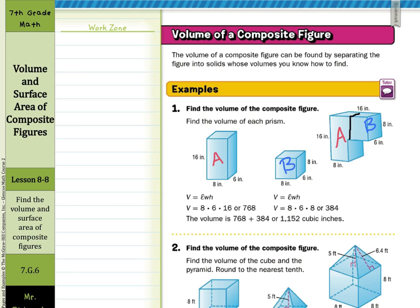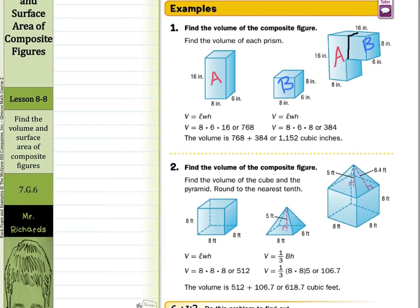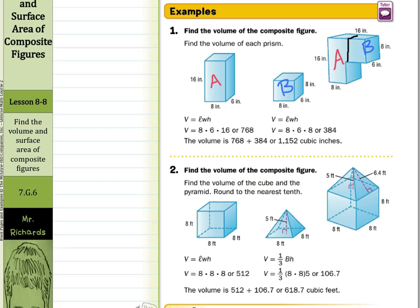For guided example 2, find the volume of this composite figure. It looks like we have a pyramid with a square base — a square pyramid — and a rectangular prism that's all the same dimension, so that's a cube. We find the volume of the cube using length times width times height, and the volume of the square pyramid using one-third times the area of the base times the height. Adding them together gives 618.7 cubic feet.